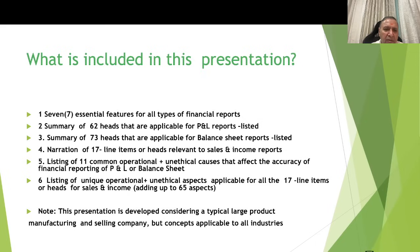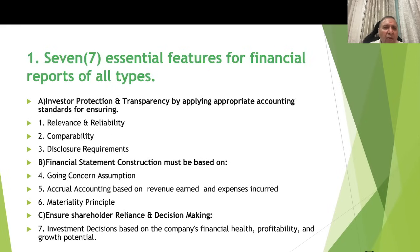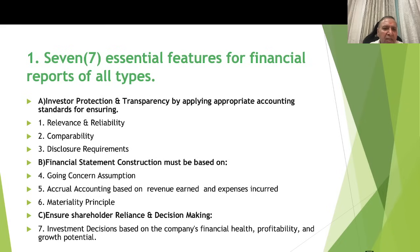The seven essential features for financial reports fall under three broad categories. Category A is investor protection and transparency — applying appropriate accounting standards for relevance, reliability, comparability, and disclosure requirements. Category B requires financial statements to be based on the going concern assumption, accrual accounting based on revenue earned and expenses incurred, and the materiality principle. Category C is that financial reporting must enable investment decisions based on the company's financial health, profitability, and growth potential.